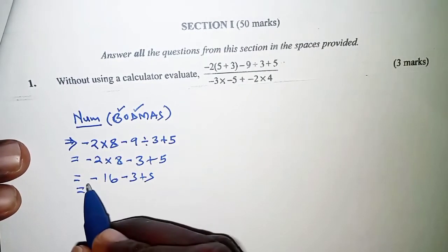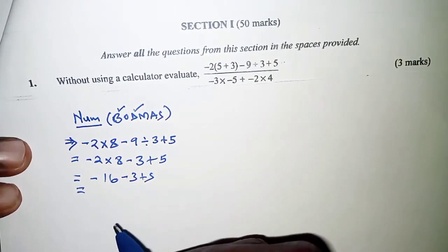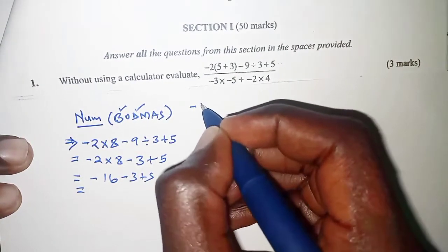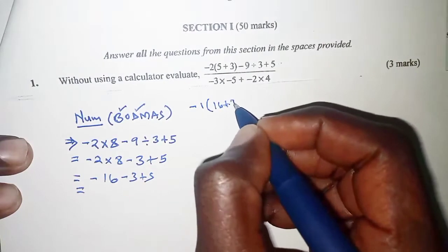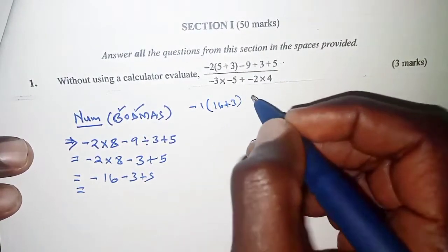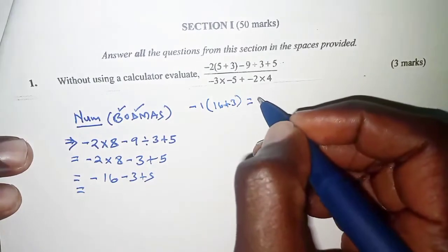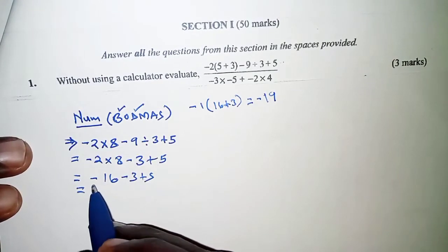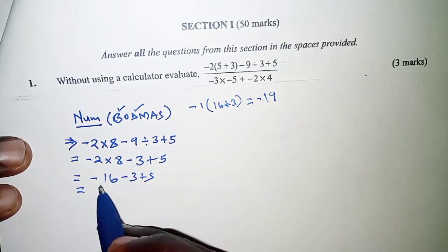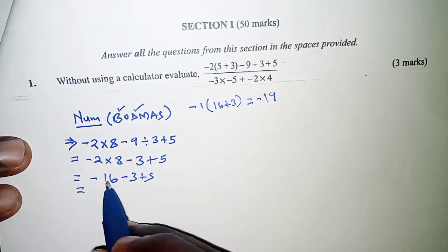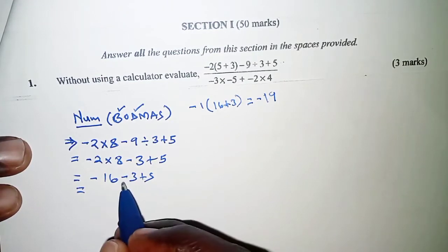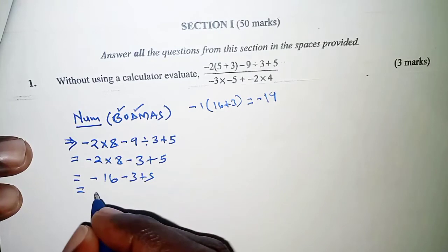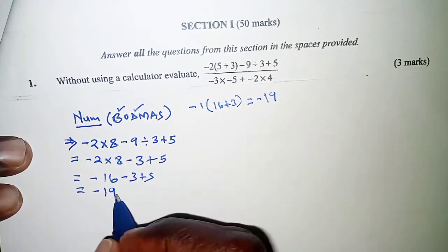For the next step, I want us to take note that negative 16 and negative 3 should give us negative 19. That is, if you have negative factored out, you'll have 16 plus 3 within the brackets, and that is equivalent to negative 19. Or you can also argue that if you have a debt of 16 shillings and then you add another debt of 3 shillings, then that should give you a total debt of 19 shillings.